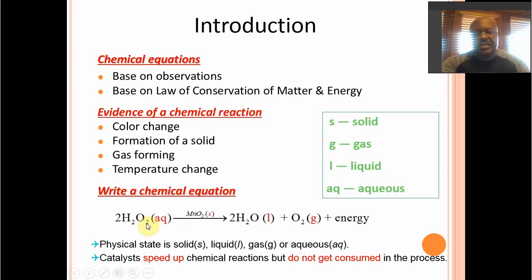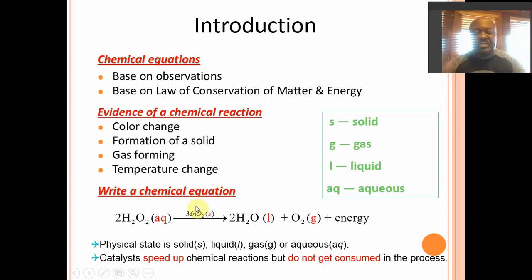Let's start with an example here. Hydrogen peroxide, H2O2 — left on its own, like the 3% you can buy from a grocery store, nothing happens. Sprinkle in some manganese dioxide, and voila, a reaction occurs. You see gas being formed, some bubbling, and we can test the gas and verify it's oxygen.